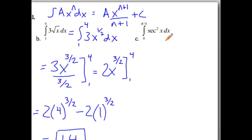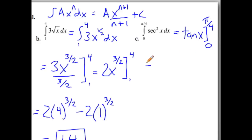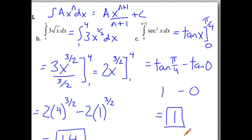This works with trig functions too. To evaluate the definite integral from 0 to π/4 of sec²(x) dx, we recall that the antiderivative of sec²(x) is tan(x). So this becomes tan(x) evaluated from 0 to π/4. Substituting: tan(π/4) = 1 and tan(0) = 0, so the result equals 1. We wouldn't have been able to do this with summation notation since we didn't have formulas for sums of trig functions, but now it's just a couple of steps.